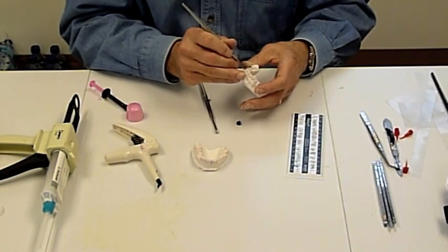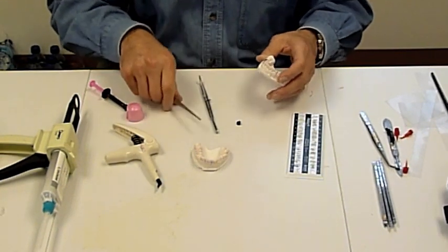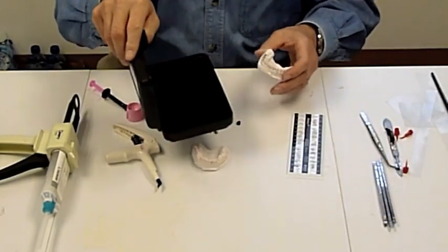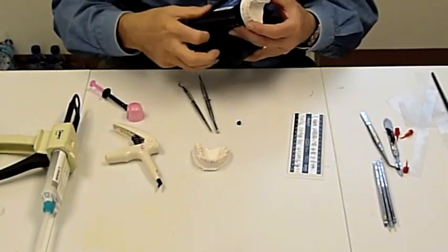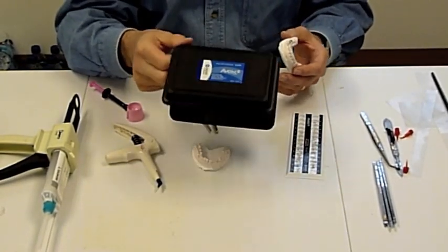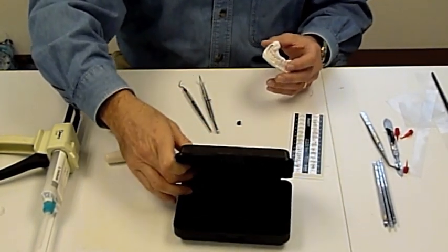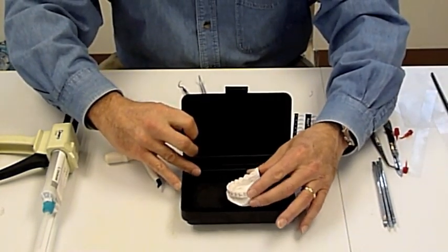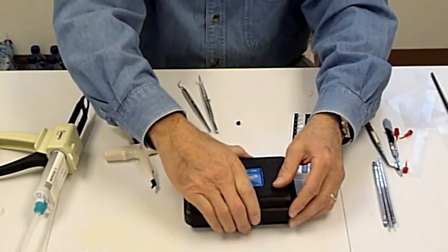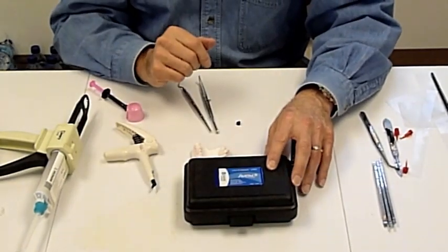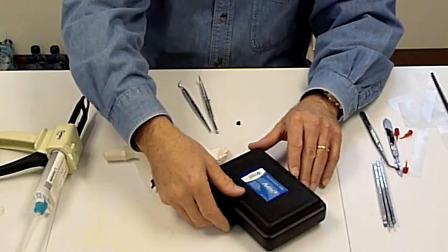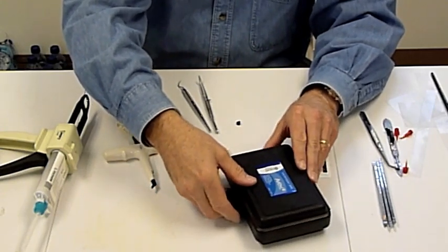When the staff have questions about where the bracket should be, they'll often use the little black box that we have here, courtesy of Opal. Any of your doctors can get these from Opal by ordering enough CXI or MX brackets. The staff will put it in there, it's light tight, the brackets won't set up, I can adjust them, and then the staff is able to go ahead and cure them to the model.